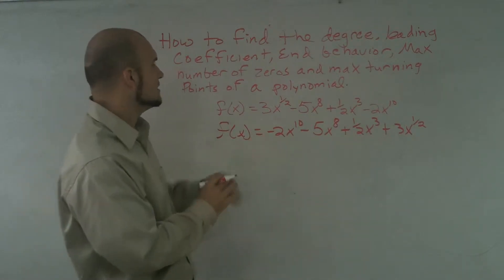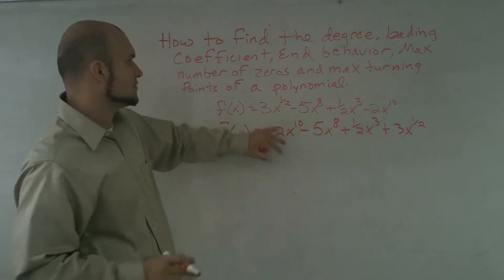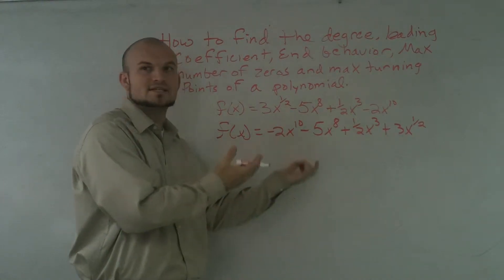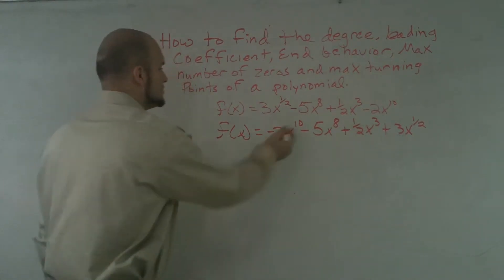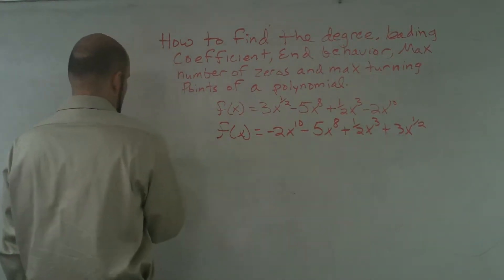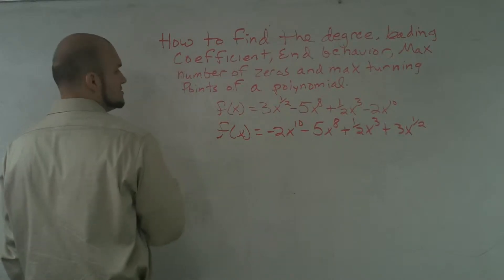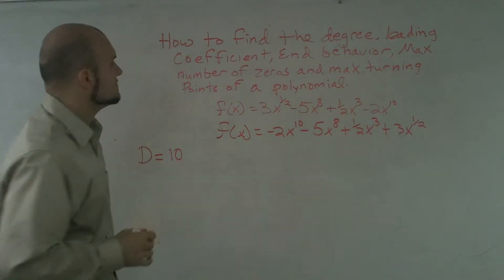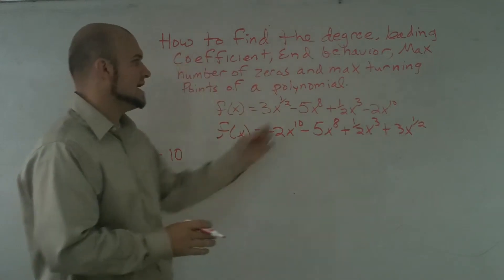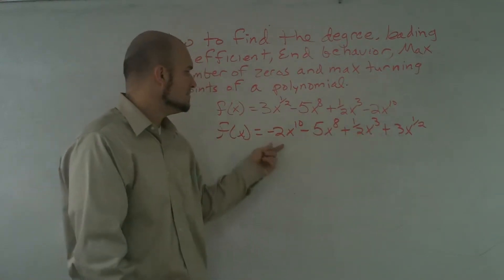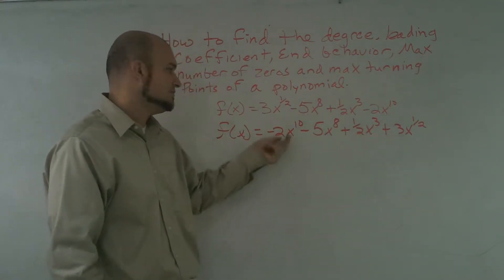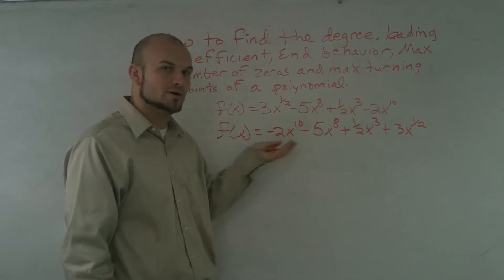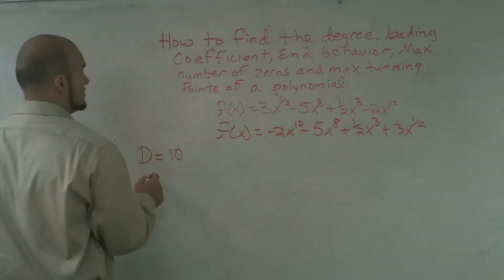Now that I have it in descending form, I have something to work with. The degree is always the highest exponent in the leading term, so my degree is 10. The leading coefficient is the number in front of the variable in the leading term, which is negative 2.